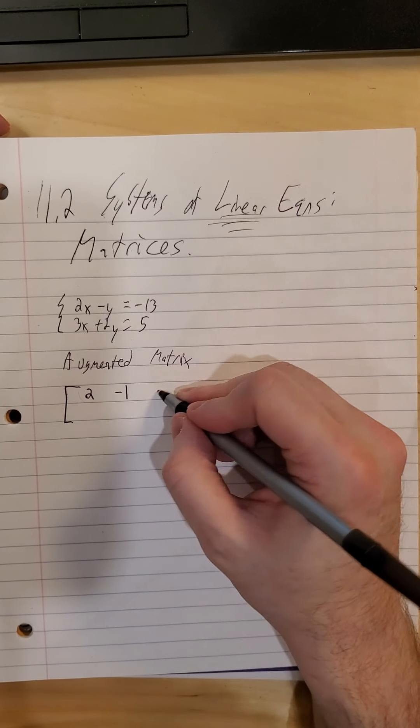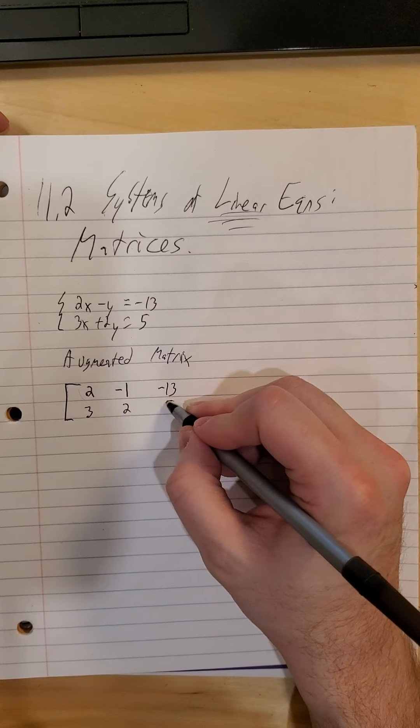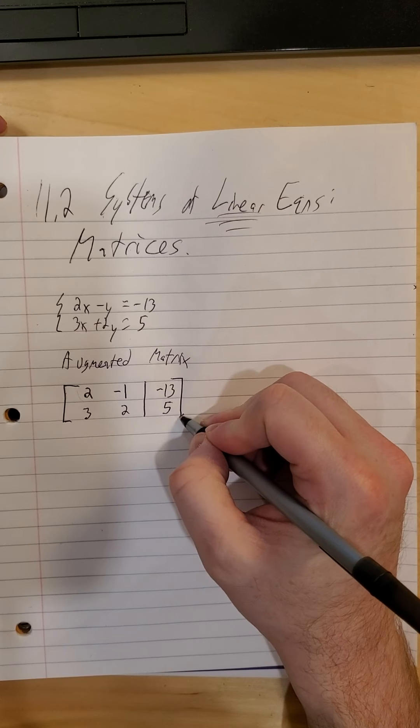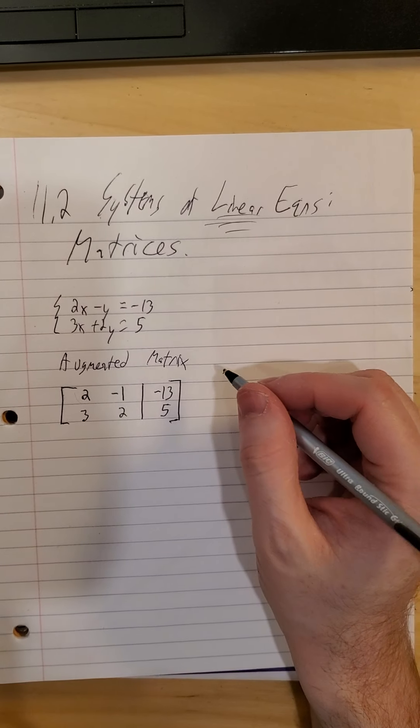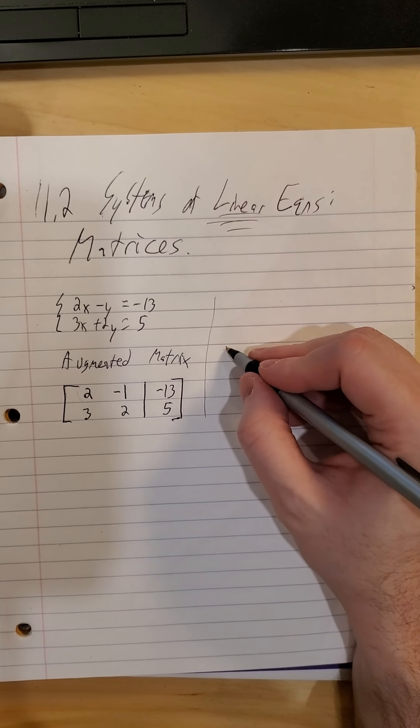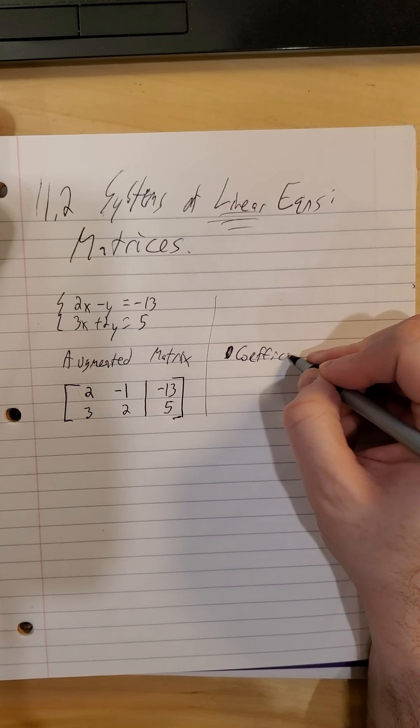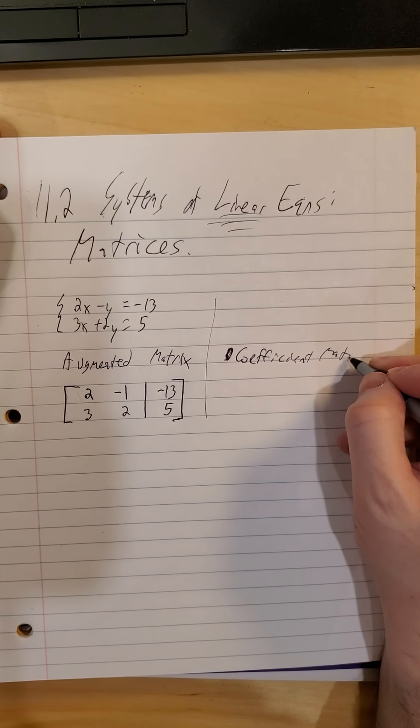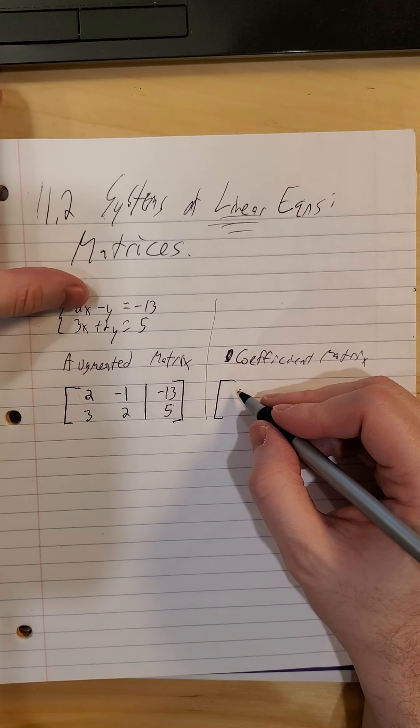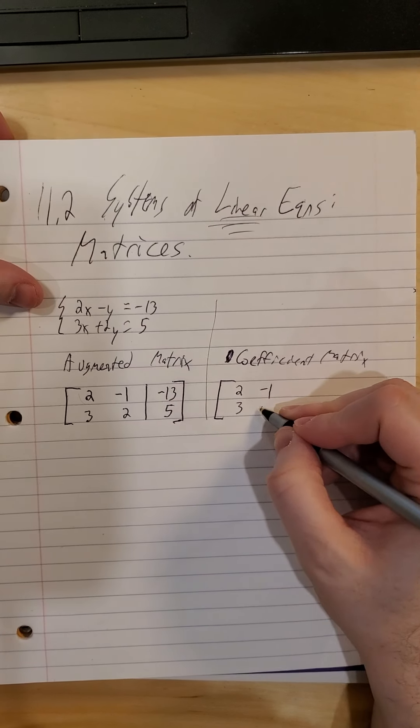So instead of the nice pretty brace on the side, we get brackets on both sides. So our coefficients would be a 2, a negative 1, and a negative 13, a 3, a 2, and a 5. And instead of a couple of equal signs, we just use a vertical line in between them and we close the bracket. We occasionally will also see what's called a coefficient matrix. So that's basically just things that are coefficients of the variables. So a 2, a negative 1, a 3, and a 2.